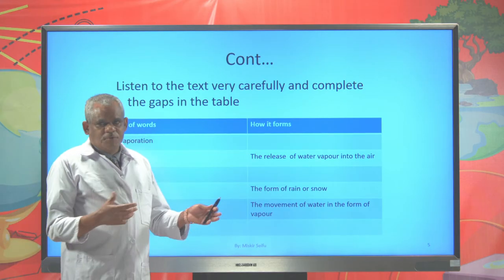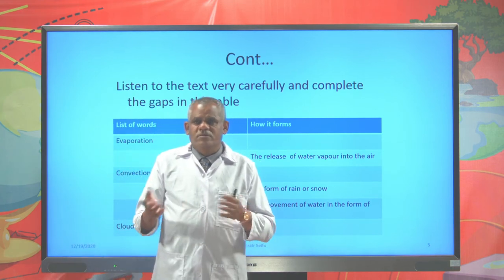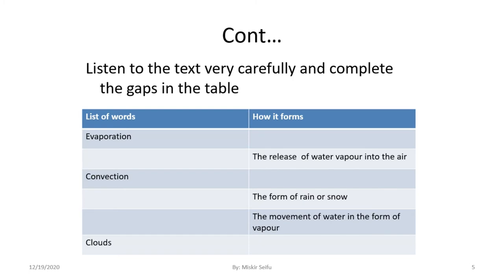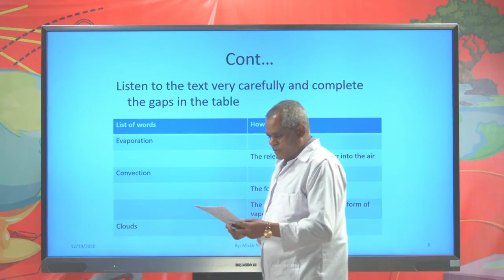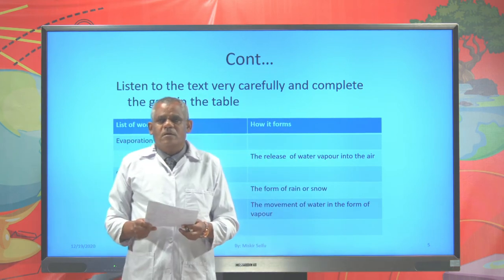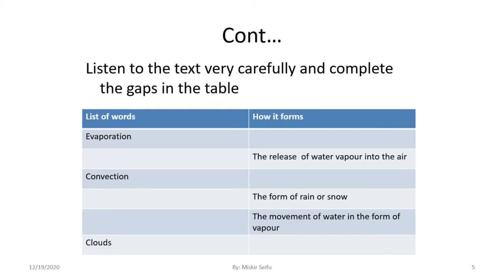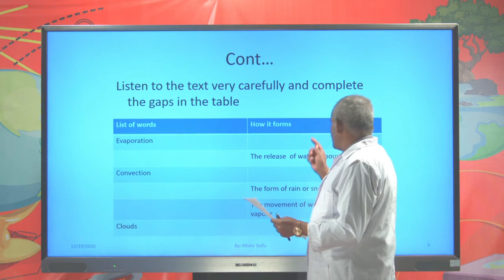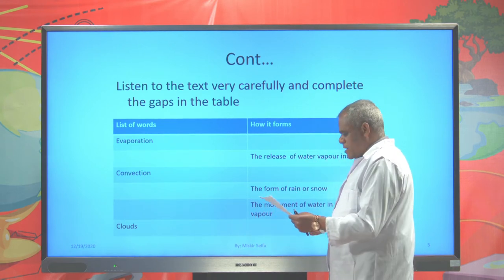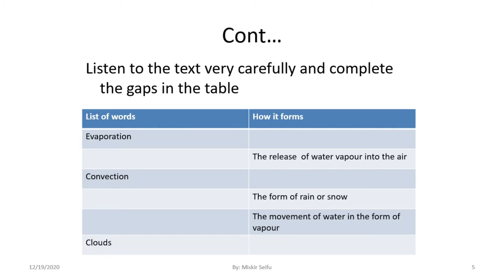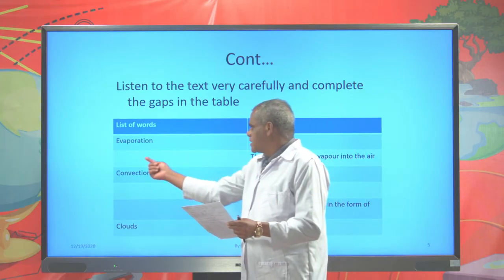That's all now. I'm sure that you have already checked each other. Hopefully you will reflect your answer. Let's come to the first one — evaporation. What's evaporation? How does it form? The sun heats water in oceans and seas or different water bodies. How does it form the release of water vapor into the air? The release of water vapor into the air. What is the appropriate vocabulary? That's beautifully answered.